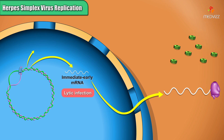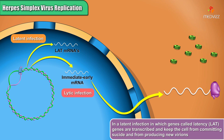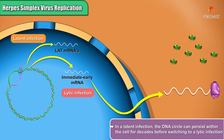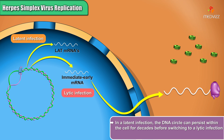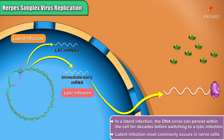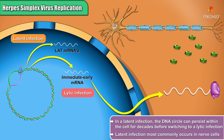However, the virus could have entered a pathway called a latent infection, in which genes called latency, or LAT genes, are transcribed and keep the cell from committing suicide and from producing new virions. In a latent infection, the DNA circle can persist within the cell for decades before switching to a lytic infection. Latent infection most commonly occurs in nerve cells.